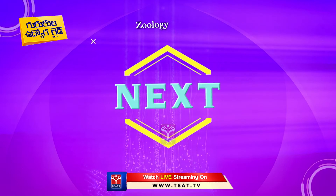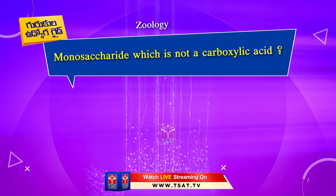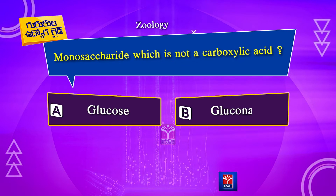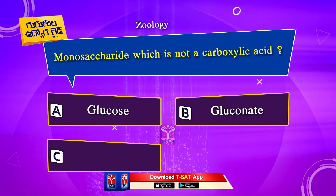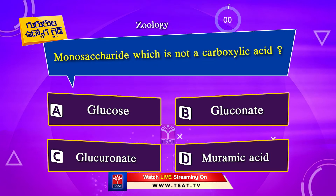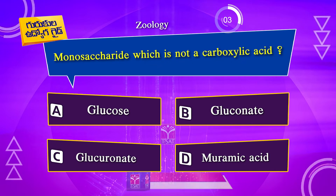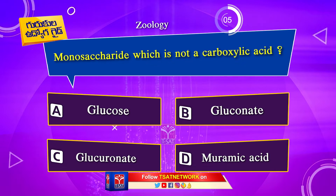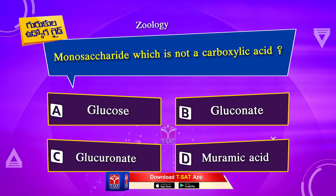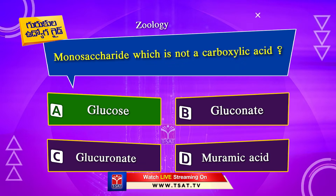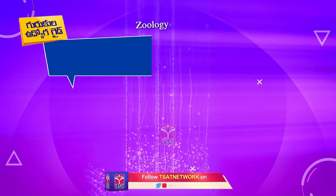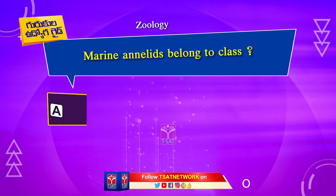Next question. Monosaccharide which is not a carboxylic acid: Option A. Glucose. Option B. Gluconate. Option C. Glucuronate. Option D. Muramic acid. The correct answer is Option A. Glucose.